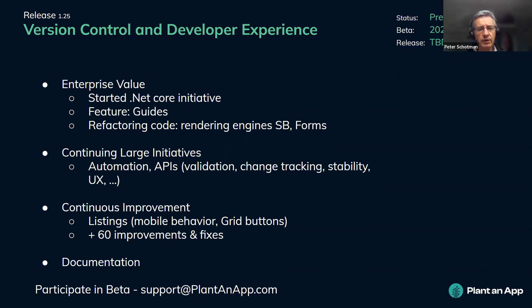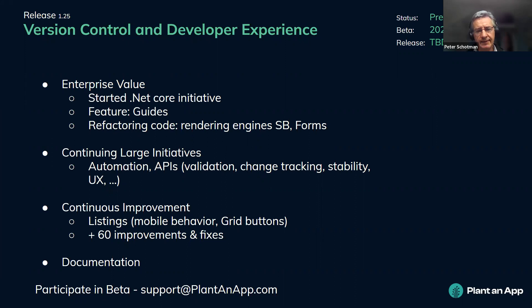The third thing we are doing is refactoring. Plant and App is based on code which used to be DNN Sharp. We're improving the rendering engines for Search Boost and Forms — especially Search Boost, where we'll move away from the XSL rendering engine. For Forms, we'll do that in the future, and we're now preparing for the move to the Razor-based engine.